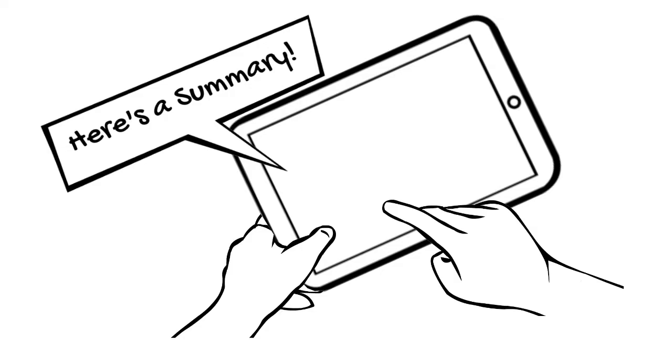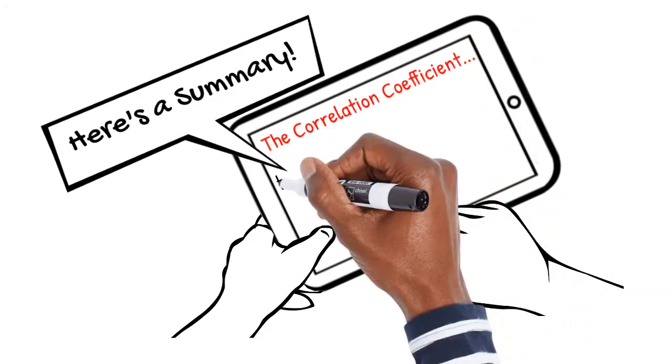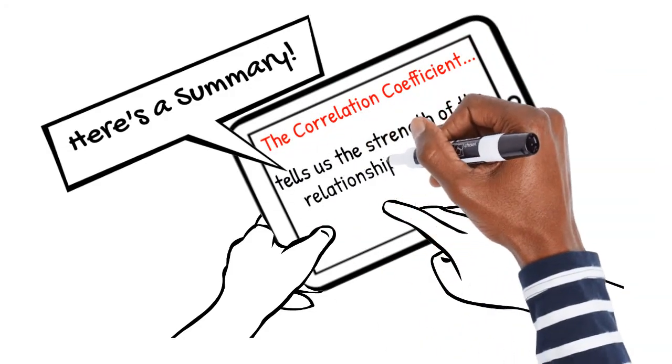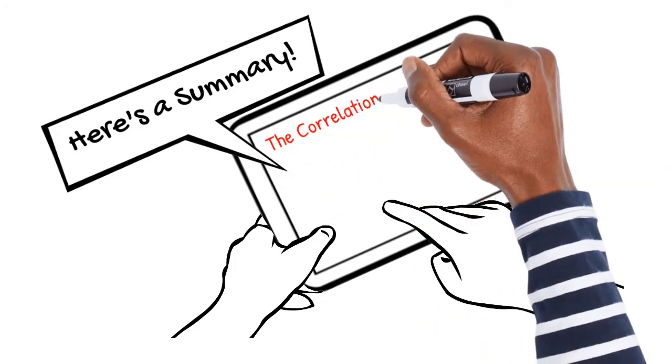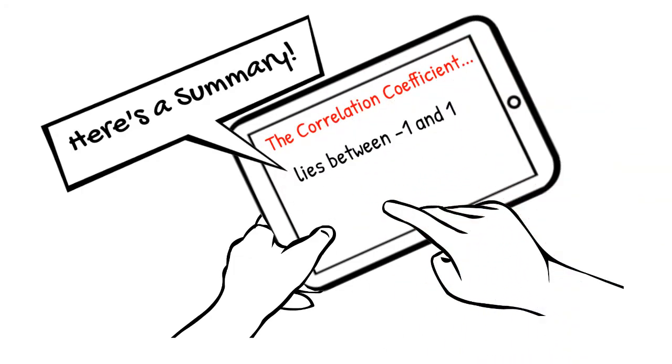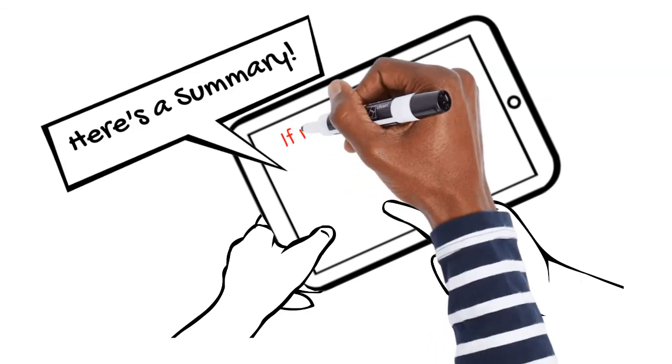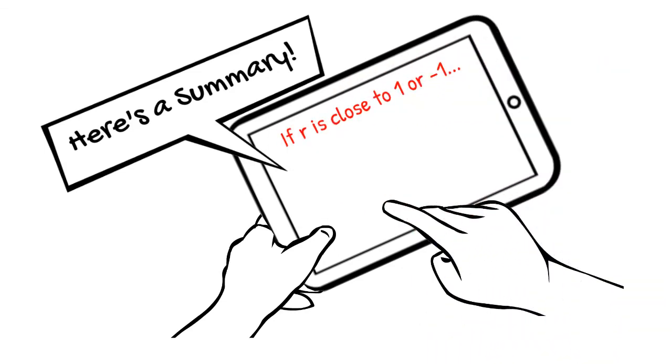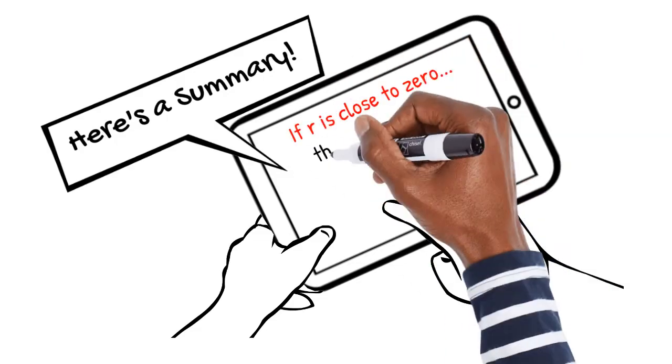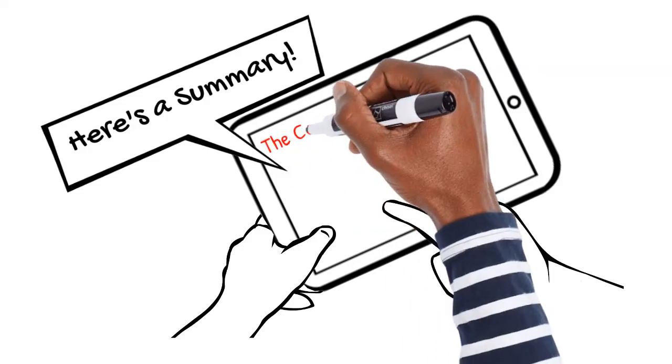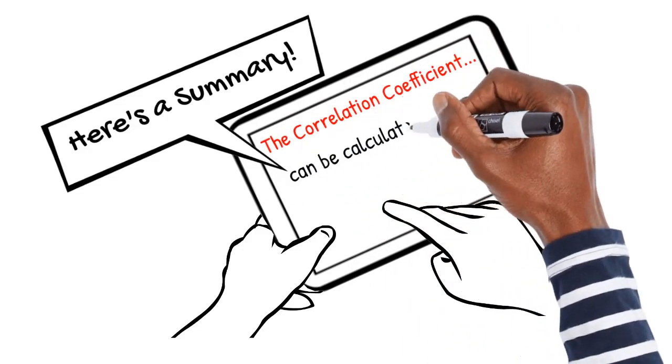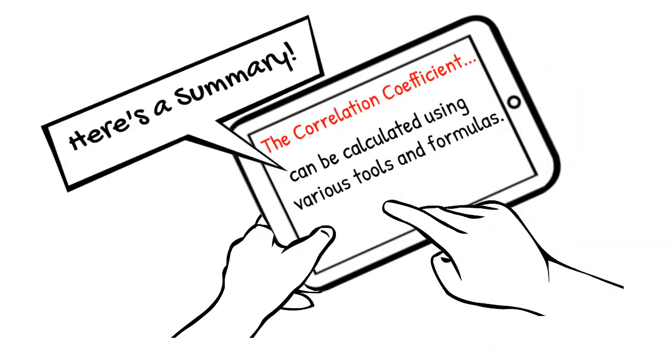Here's what we've learned in this video. The correlation coefficient tells us the strength of the relationship between two quantitative variables. The correlation coefficient lies between negative 1 and 1. If r is close to 1 or negative 1, there is a strong correlation. If r is close to 0, there is a weak correlation. The correlation coefficient can be calculated using various tools and formulas.